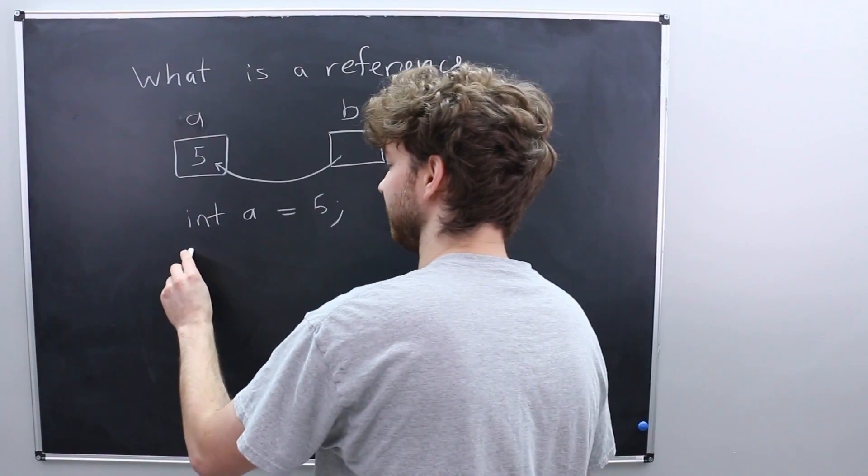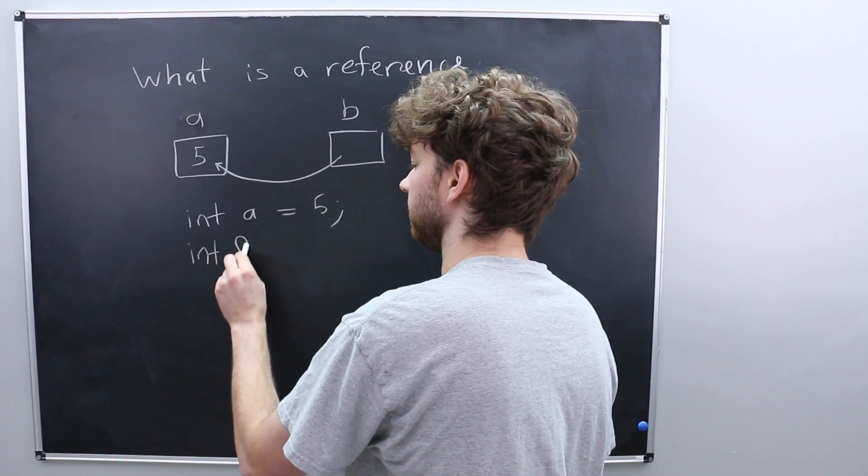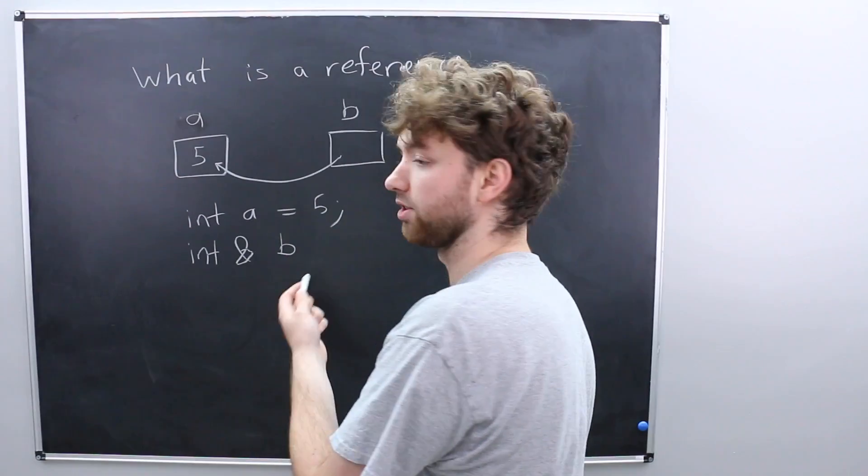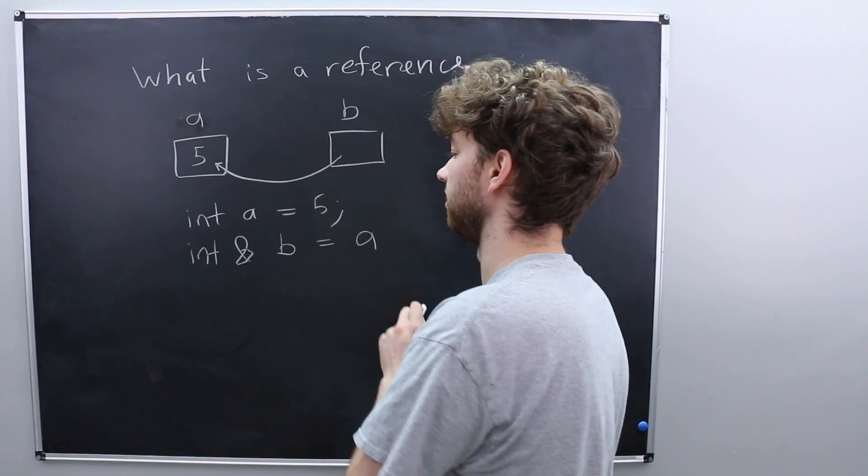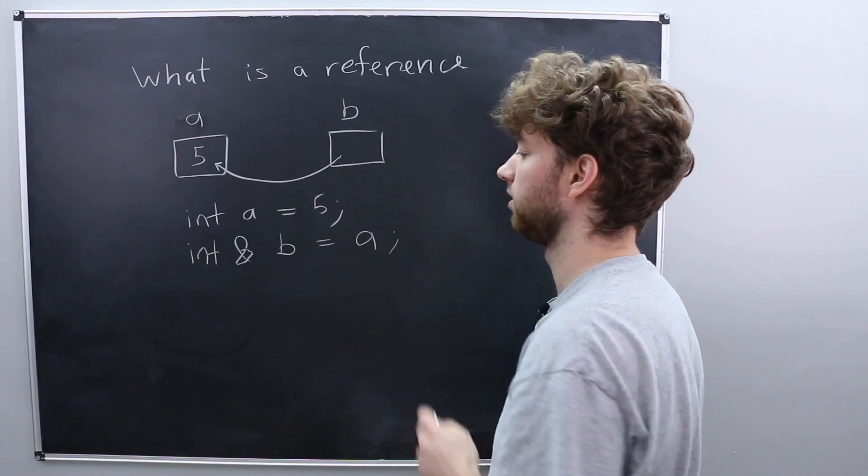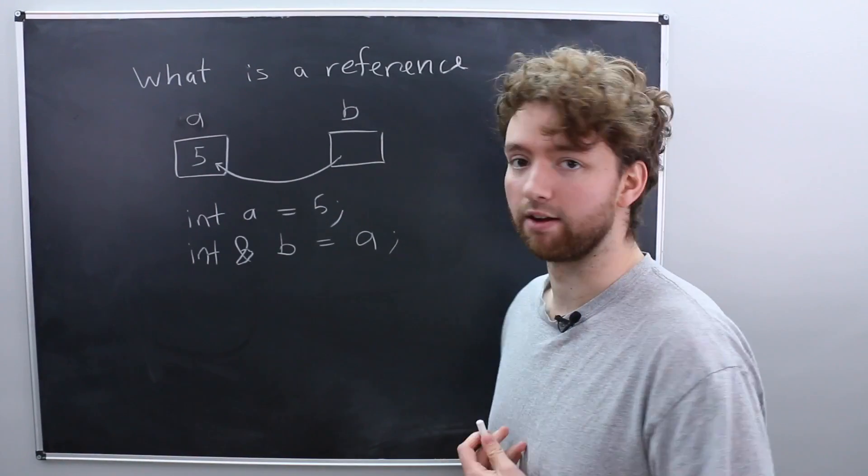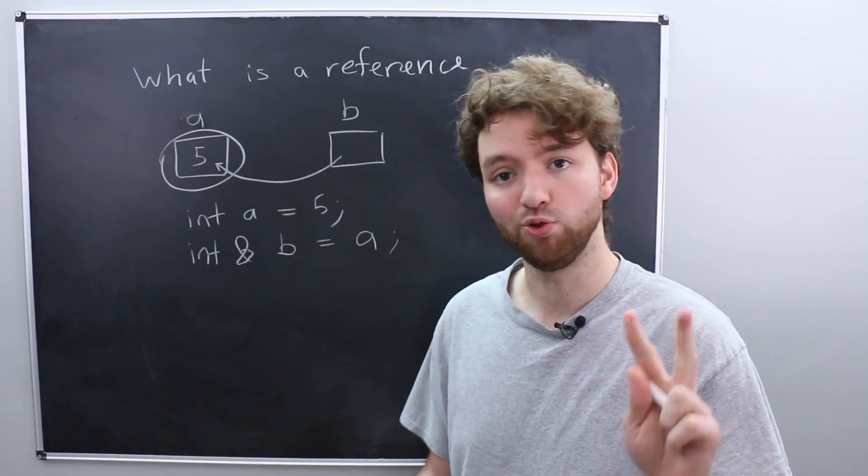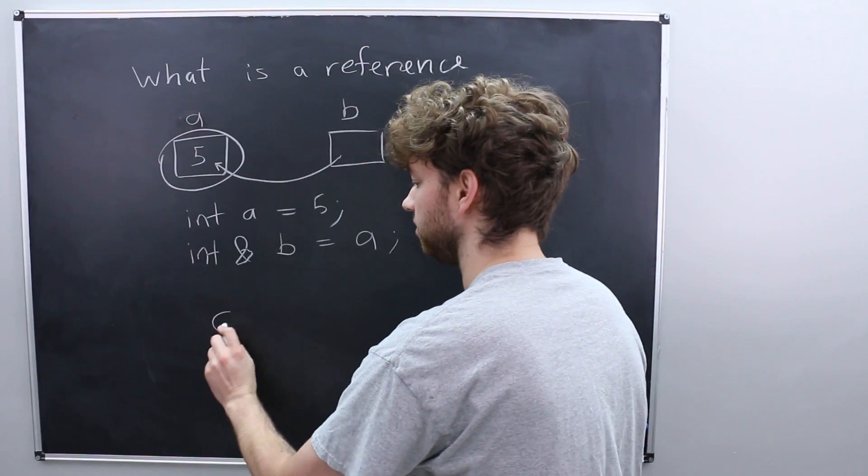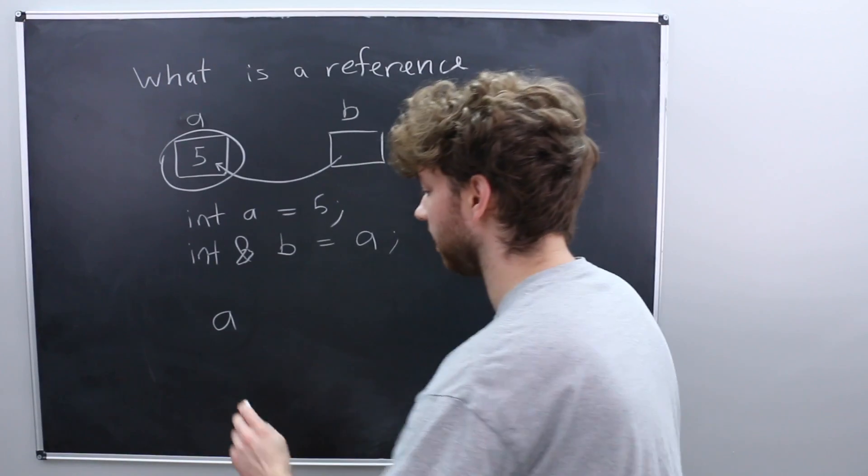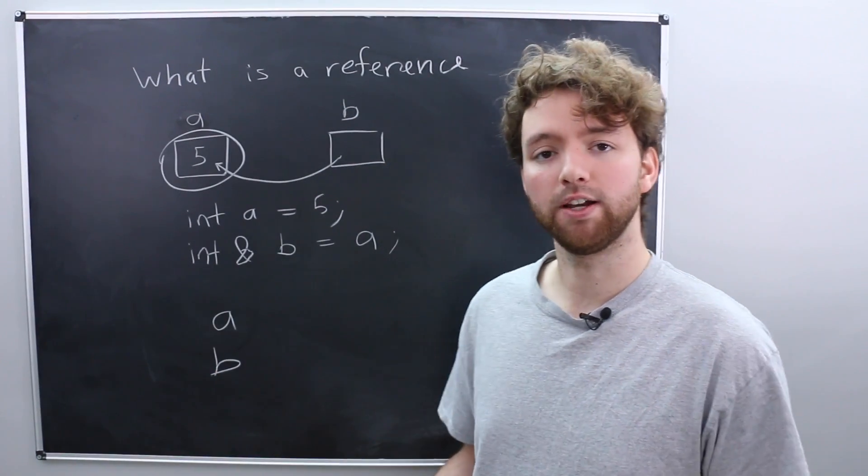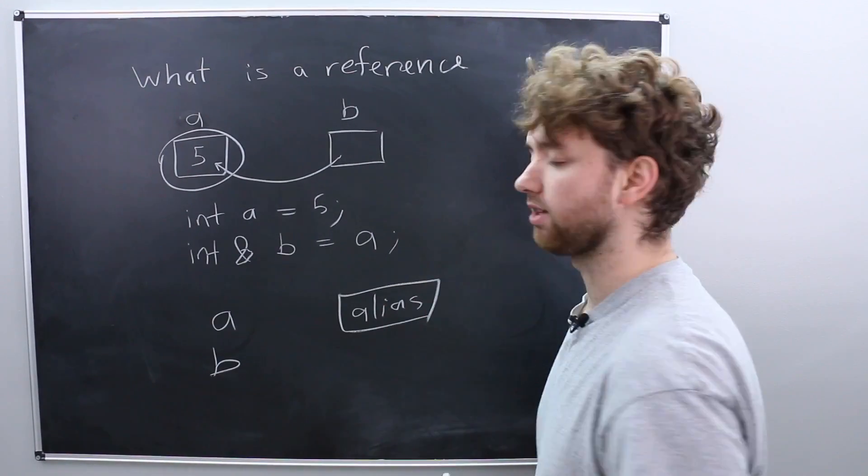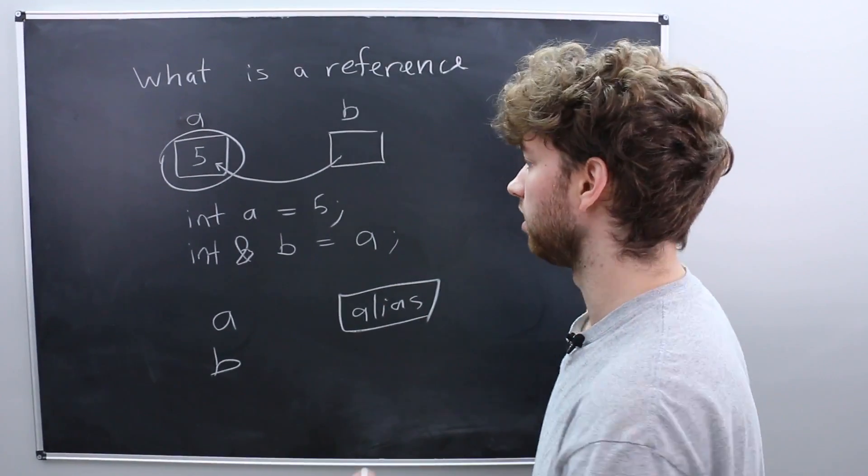And the way you would create it is by saying int, and then using the ampersand, give it some other name, such as B, and assign it the value A. That's it. That is how you create a reference. And now you can refer to this value here in two ways. The first way with A, and the second way with B. So you can think of a reference as an alias.